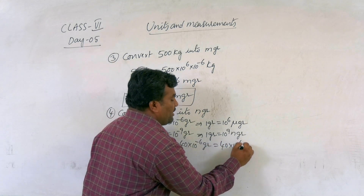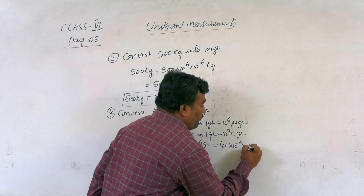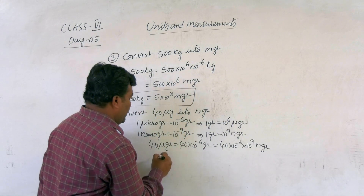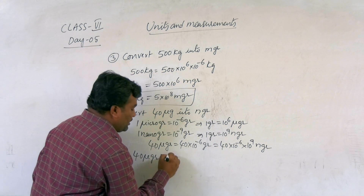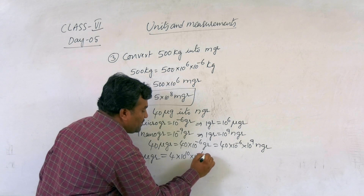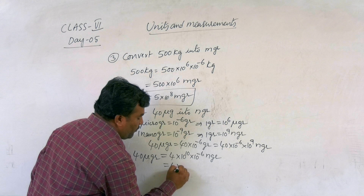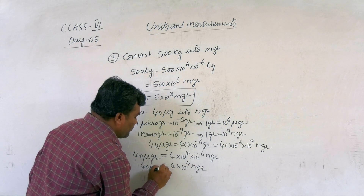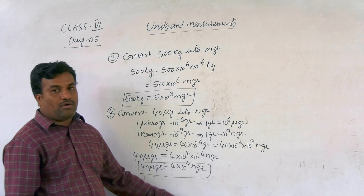Now convert grams to nanograms: 1 gram equals 10 to the power of 9 nanograms. So 40 micrograms equals 40 into 10 to the power of minus 6 into 10 to the power of 9 nanograms, which equals 4 into 10 to the power of 4 nanograms. Therefore, 40 micrograms equals 4 into 10 to the power of 4 nanograms.